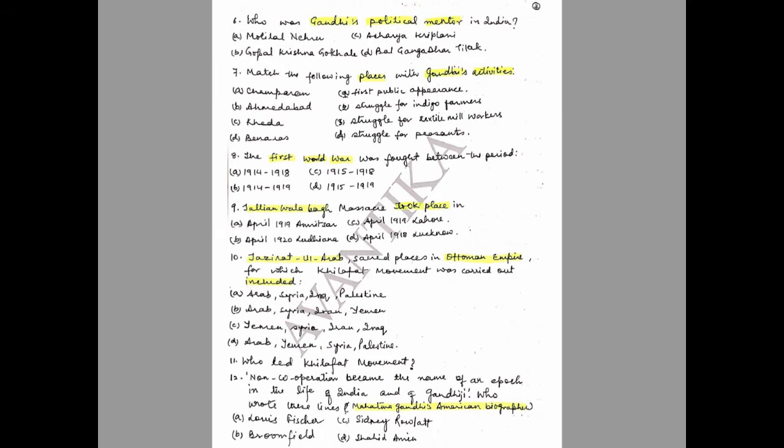Question 8: The First World War was fought between which period? Options: A) 1914–1918, B) 1914–1919, C) 1915–1918, D) 1915–1919. Choose the correct option.